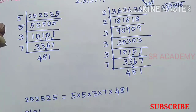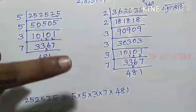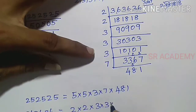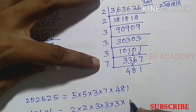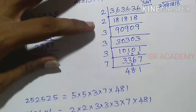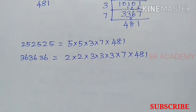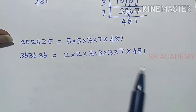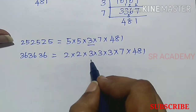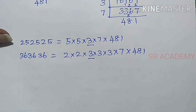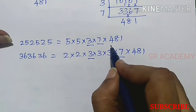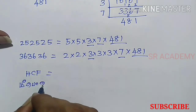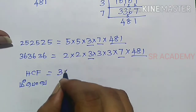And 363636 = 2 × 2 × 3 × 3 × 3 × 7 × 481. Now we use these prime factorizations to find the HCF. The common factors from both numbers are 3, 7, and 481. So HCF is obtained by multiplying the common factors.